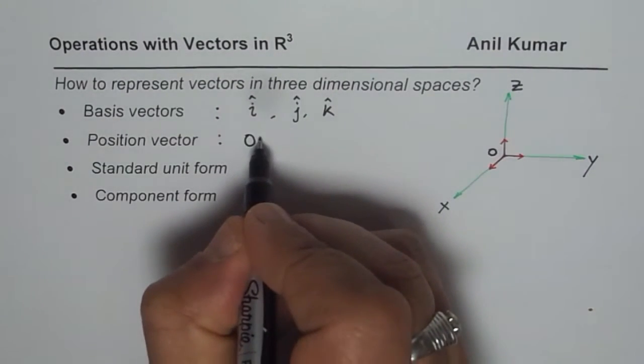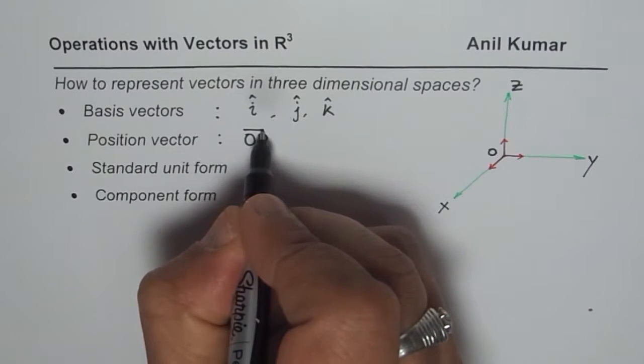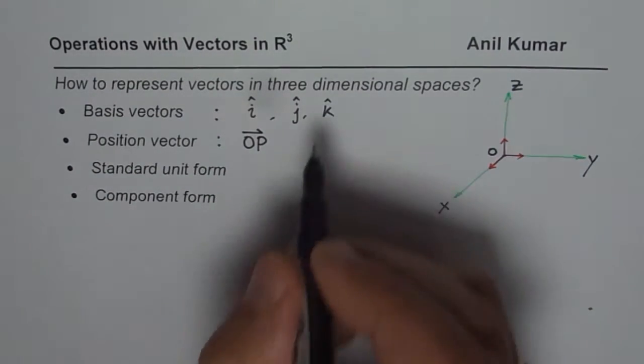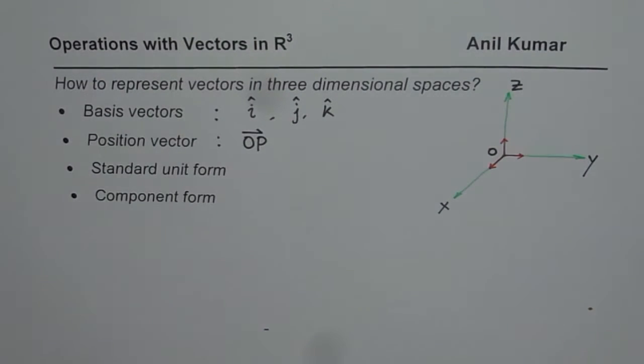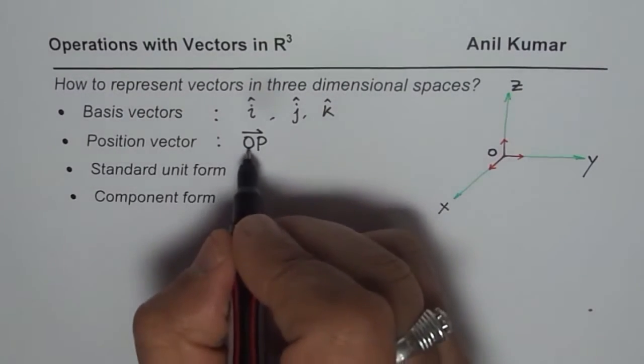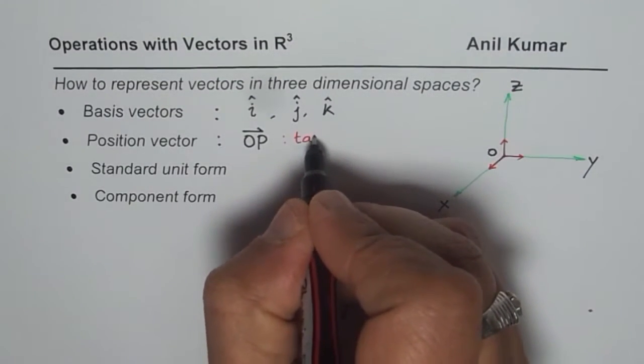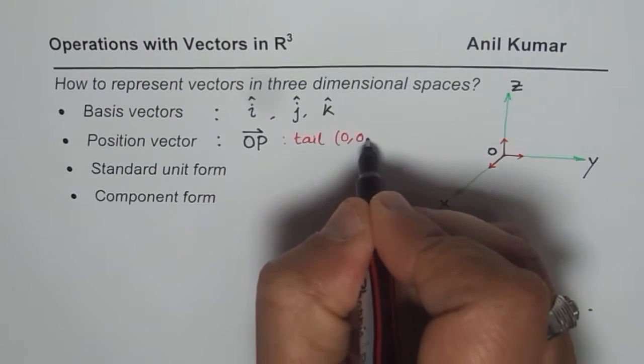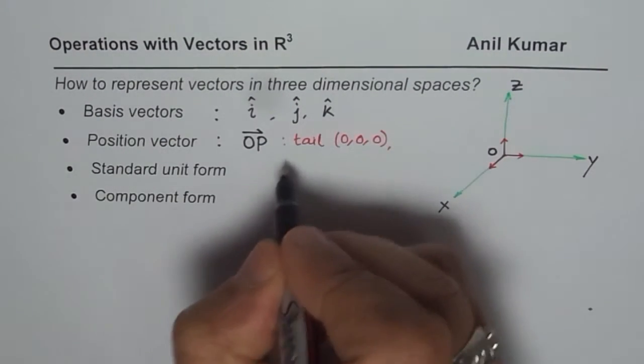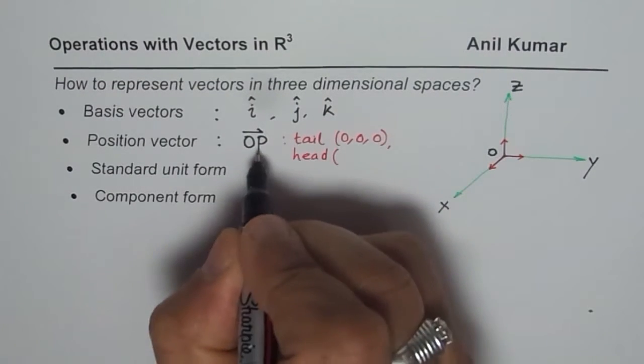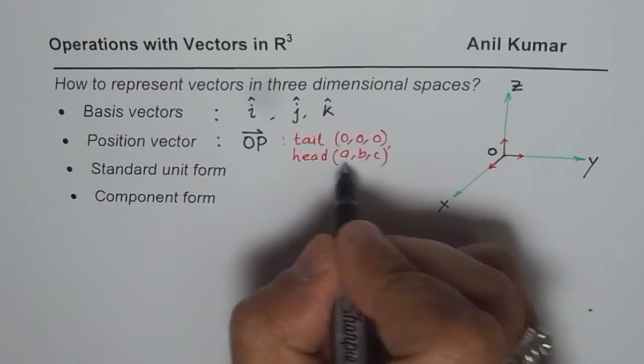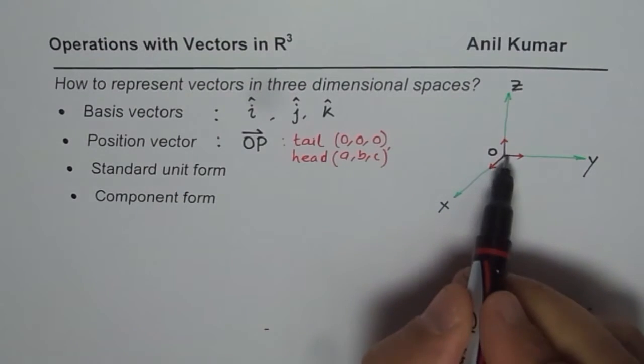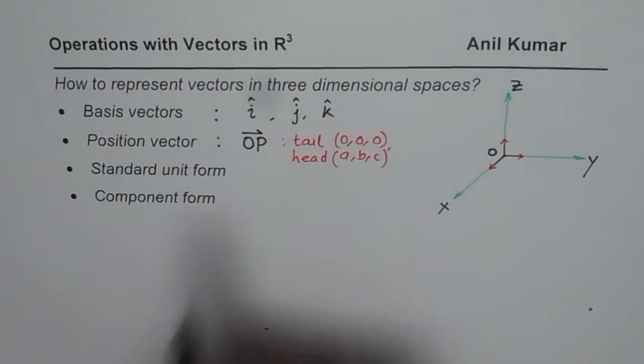Generally, I could write position vector as OP with a line on top, sometimes an arrow, or as a bold thing. Position vector OP means a vector whose tail is at origin, which is 0, 0, 0, and head at the point P.